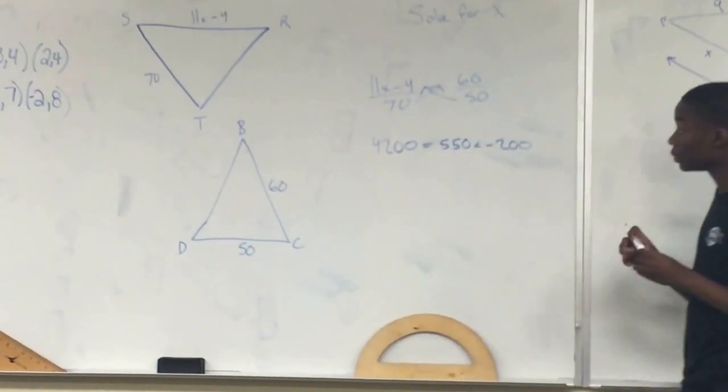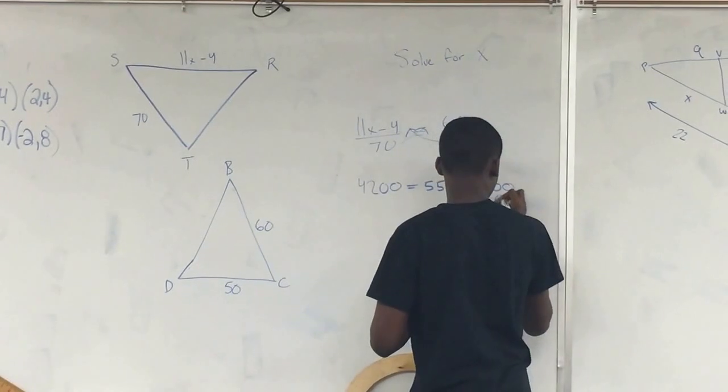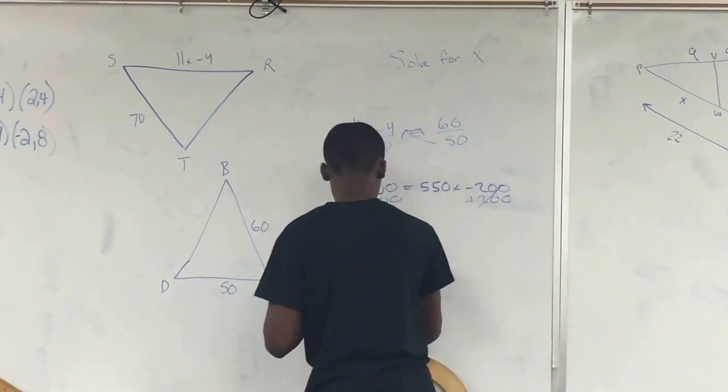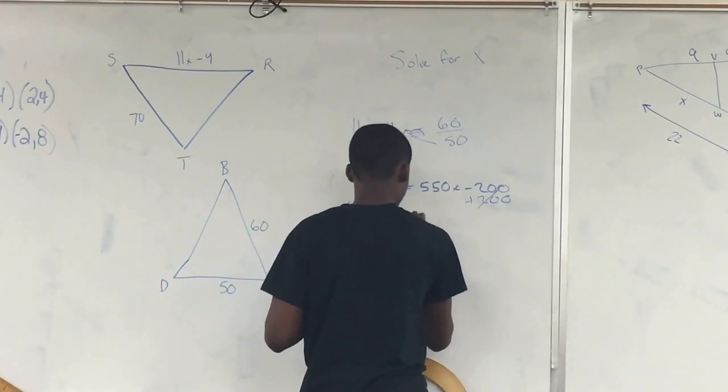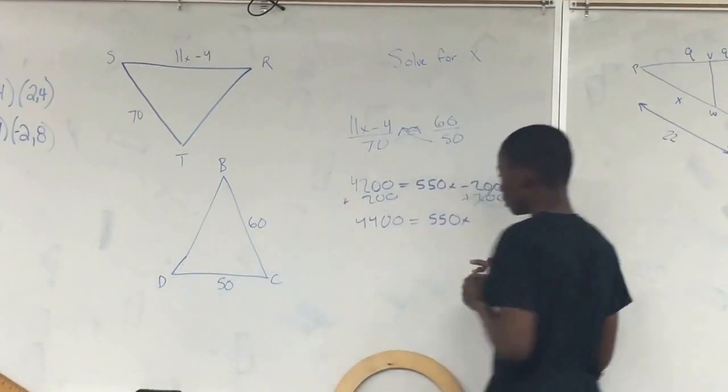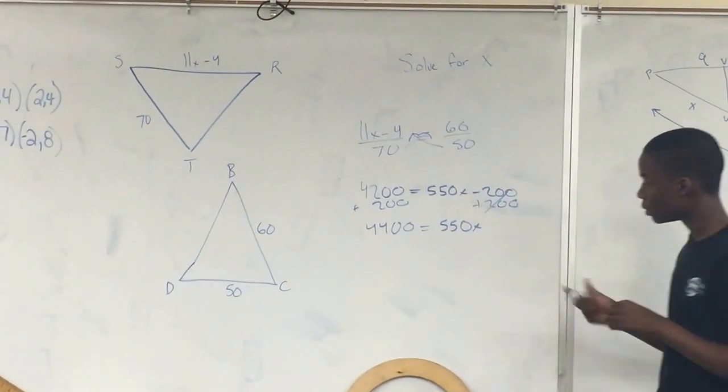Now we're going to solve for x. Add 200 to both sides of the equation. Then divide both sides of the equation by 550.